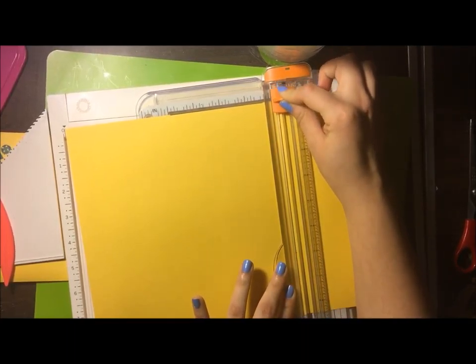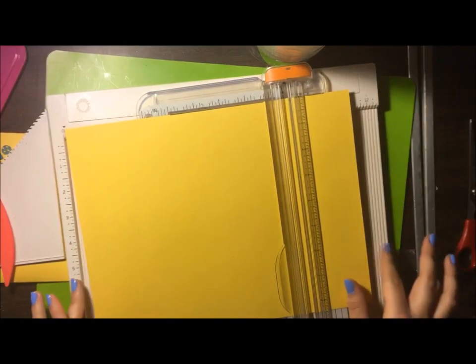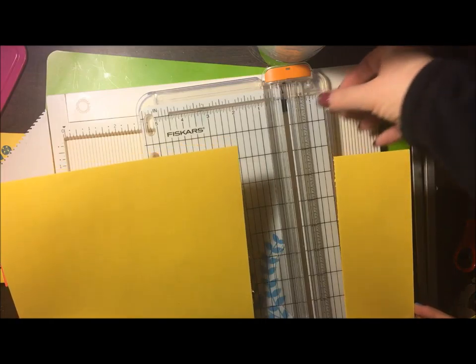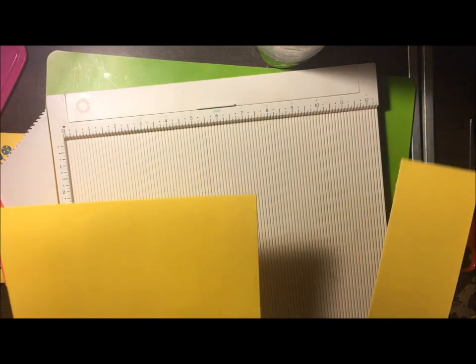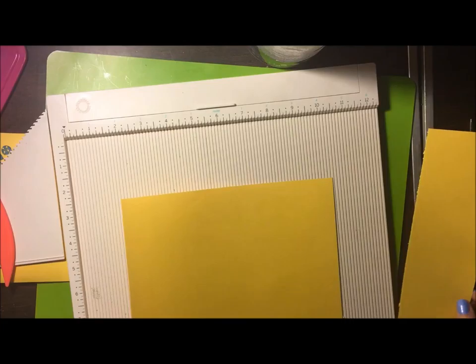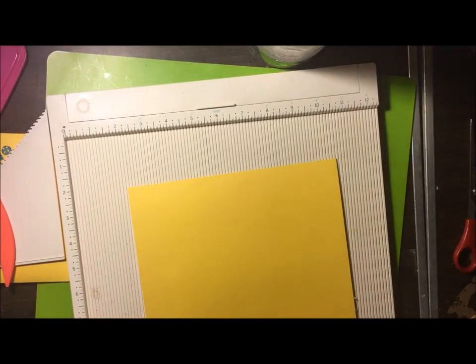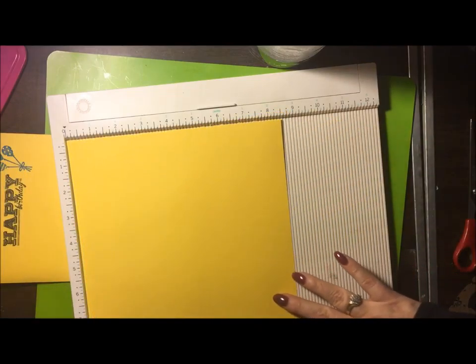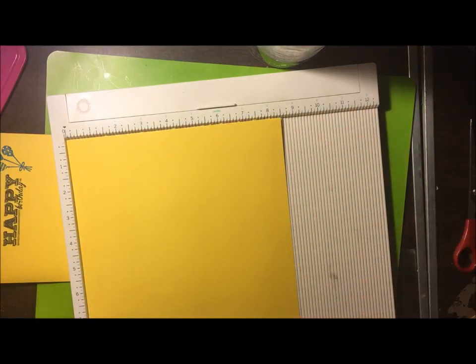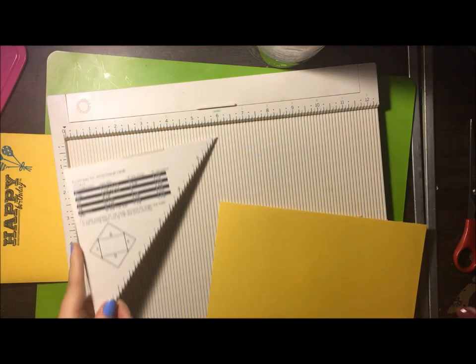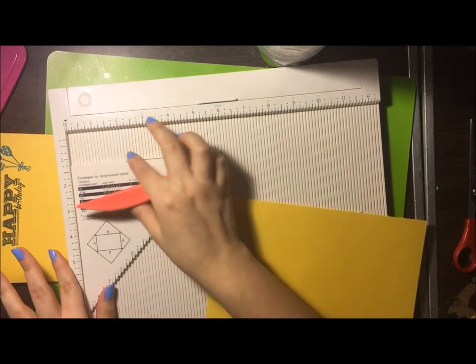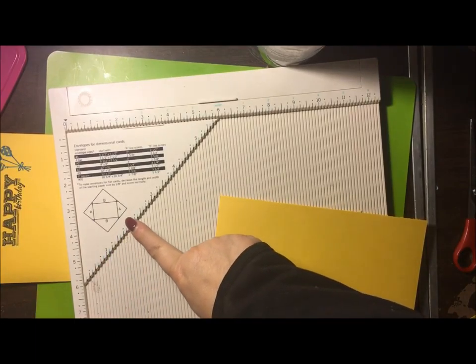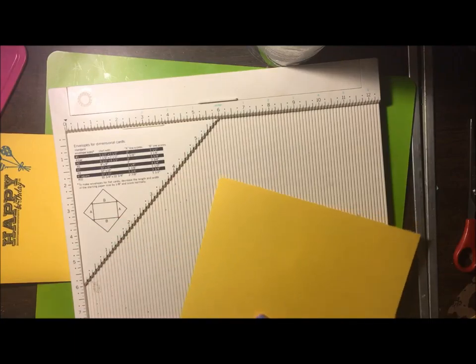Before you do anything, make sure you're flushed up against there because if not, you're going to have a very crooked piece of paper. Now you're going to push this and press firmly, not super hard, just firmly down and push it up. Keep on going. Perfect. Take out your pieces. You now have two pieces of paper, perfectly cut.